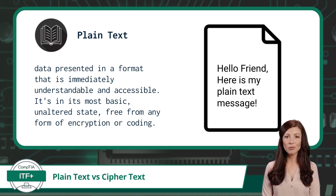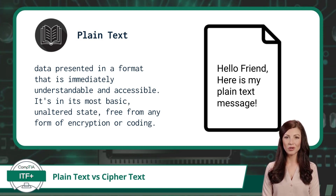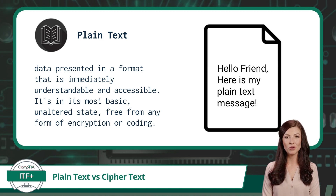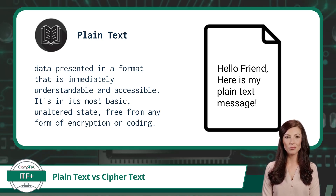Whether it's a simple message, a document, or any other form of data, if it's in plain text, it retains its original clarity and meaning. Anyone who comes across or accesses this data, be it a human or a computer, can easily read and interpret its contents. In essence, plain text is like an open book — transparent and straightforward, waiting to be read by anyone who stumbles upon it.